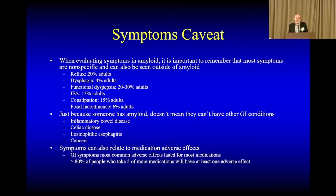The third point of note is that the most common adverse effects with most medications used tend to be GI symptoms, so it's often very hard to separate what's a symptom from amyloid and what's the result of the medications. About 80% of people who take five or more meds will have at least one adverse effect from one of those five. So again, it's very tough to separate whether this is a GI result of amyloid or a result of age and other medications.